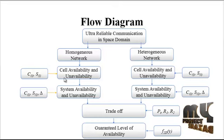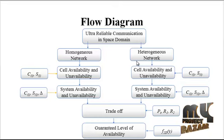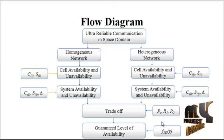After cell availability, we find the system availability and unavailability. Similarly, for the heterogeneous network, we predict cell availability as well as system availability. The cell and system may be available or unavailable. Based on that, the code is generated, the trade-off is estimated, and the trade-off equations are plotted. Finally, the guaranteed level of availability is determined to transmit data without any data loss.